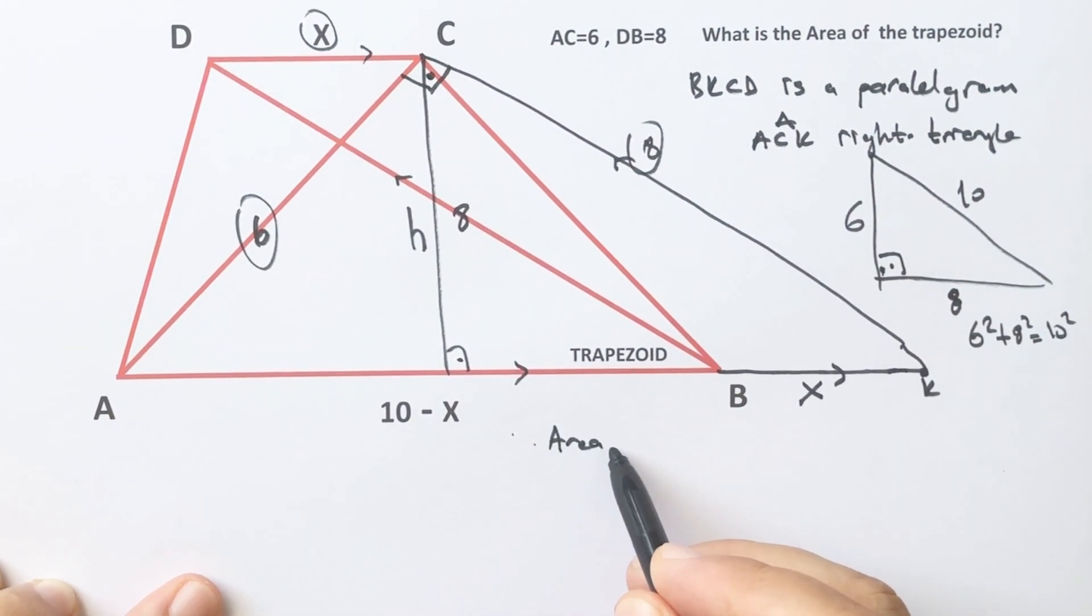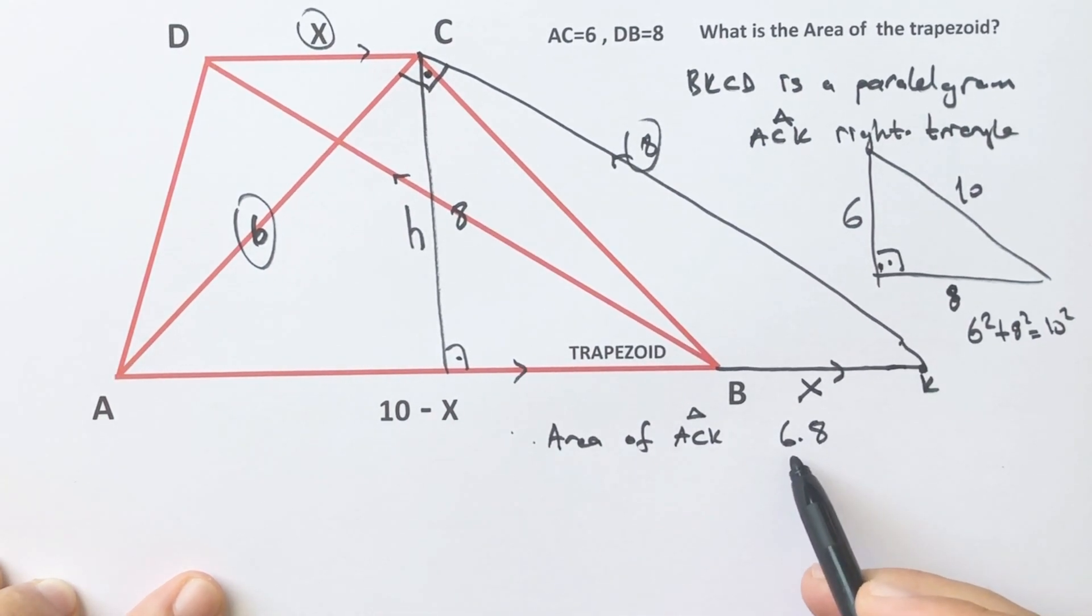The area of the ACK triangle is h times 10 over 2.